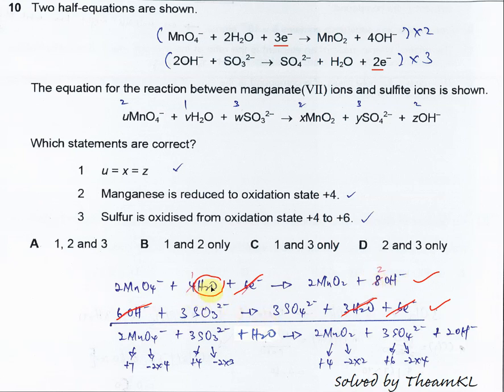After that, combine the reactants left to left and the products right to right. So eventually you get this overall equation. Once you get this, then you can answer the question.